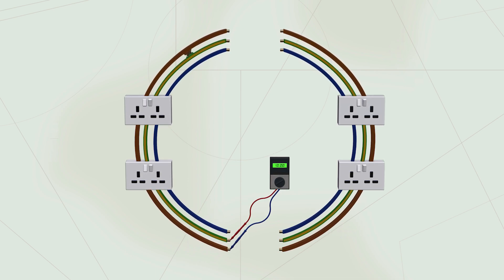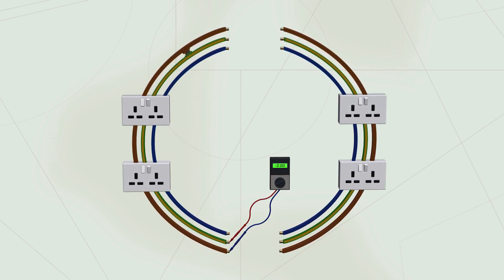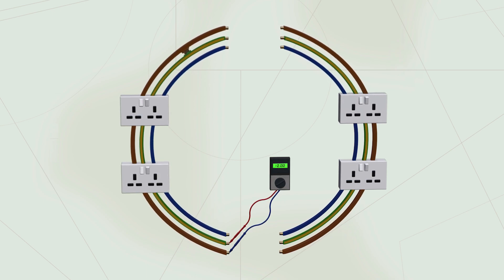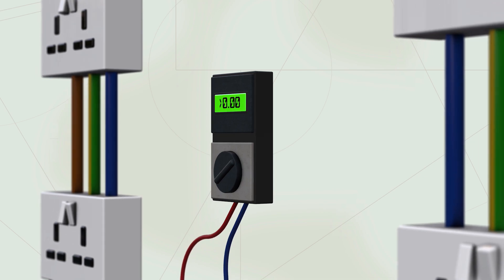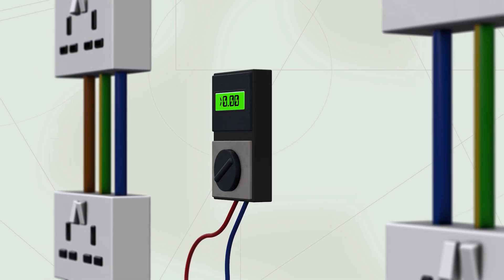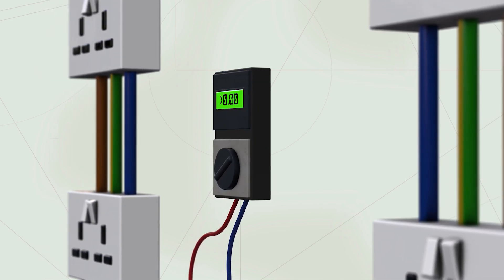To begin locating the fault, the circuit must be split into two parts, known as the half split method. As you can see, using this method instantly splits the circuit into two parts, each half the size of the original. Only this time, one half of the circuit has no fault.